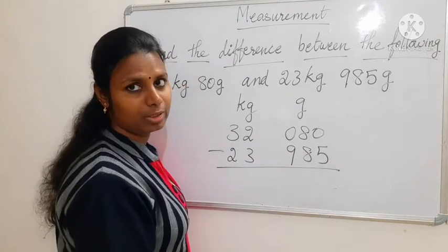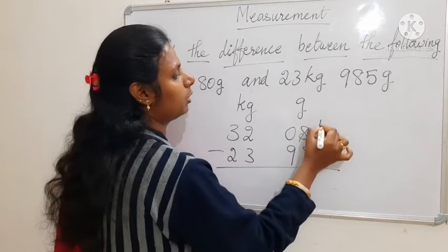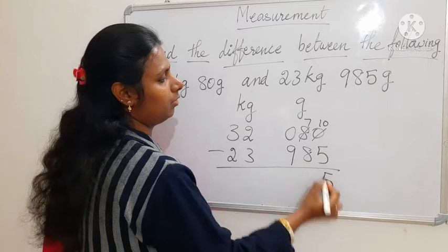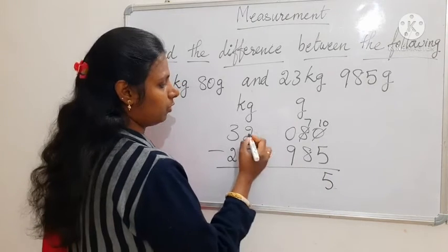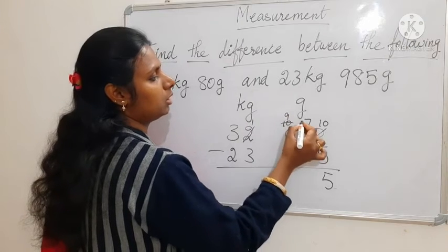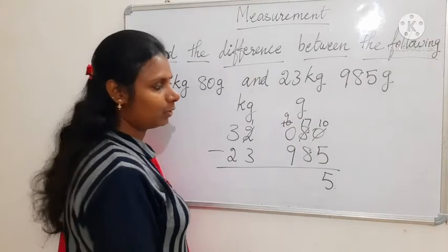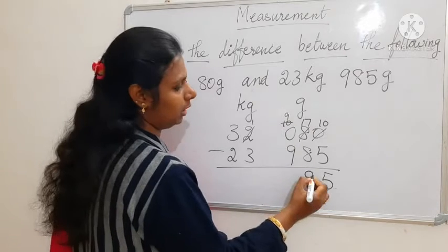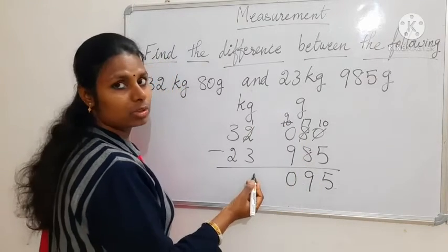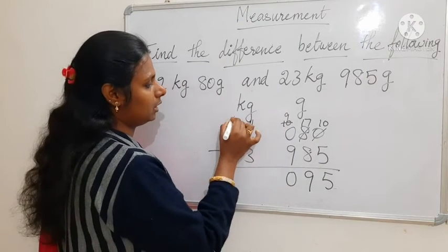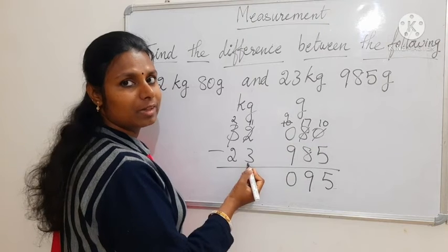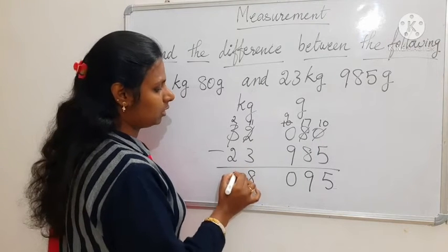0 minus 5 — we cannot, so we borrow. It becomes 10 and 7 here. So 10 minus 5 is 5. Then 7 minus 8 — we cannot, so we borrow again. It becomes 1 here and 17 here, then 9. So 17 minus 8 is 9. Then 9 minus 9 is 0. From 1 we cannot subtract 3, so it becomes 11, and here 2. So 11 minus 3 is 8. Then 2 minus 2 is 0.